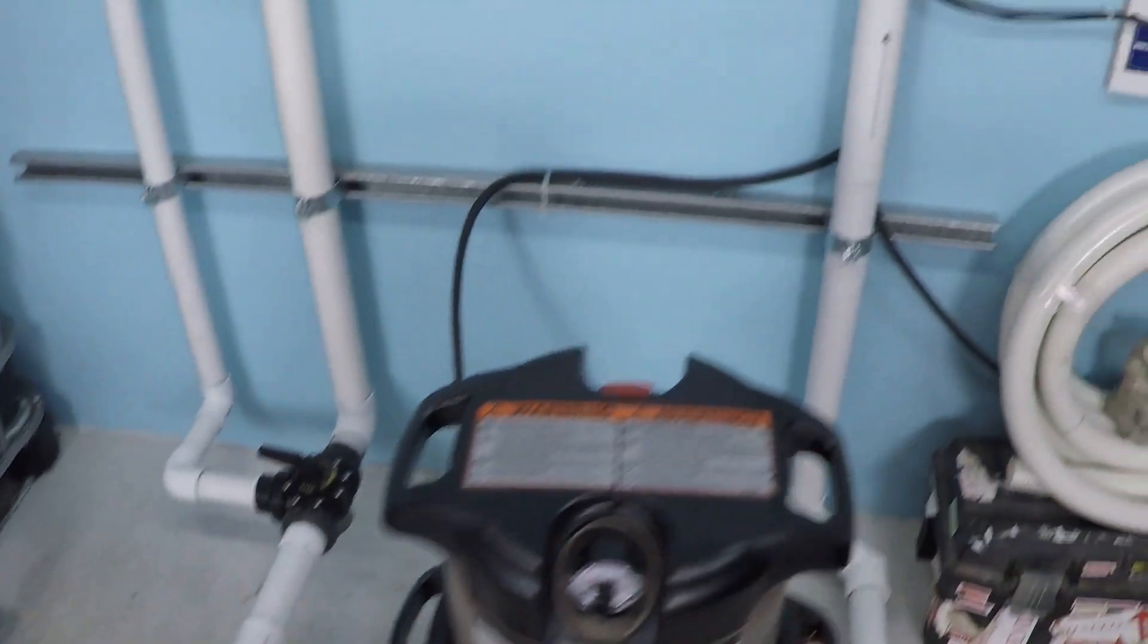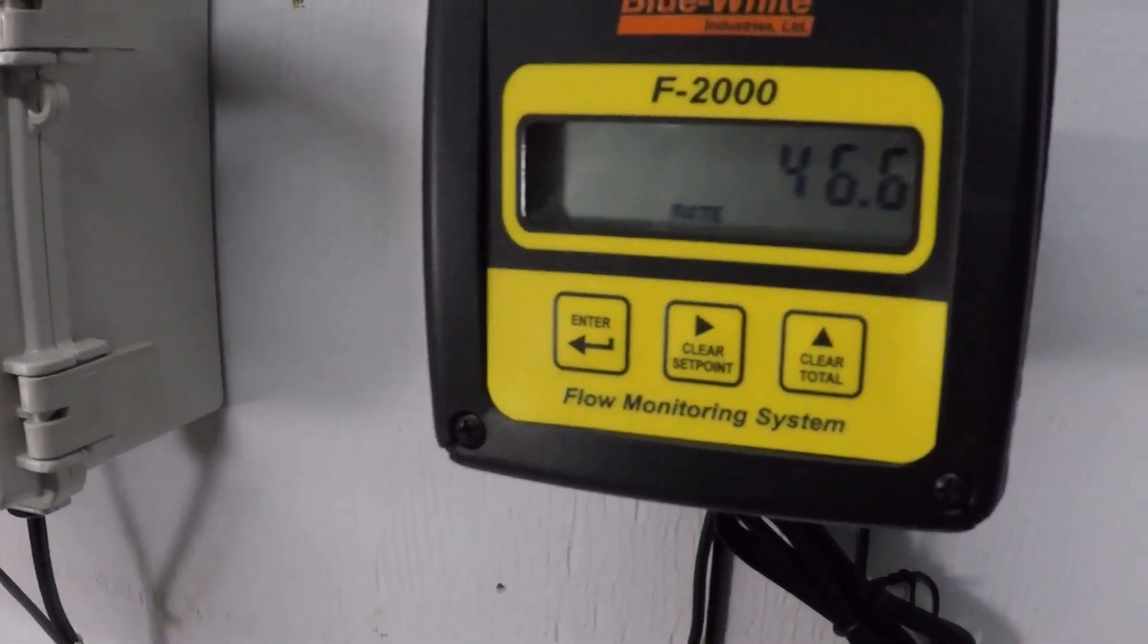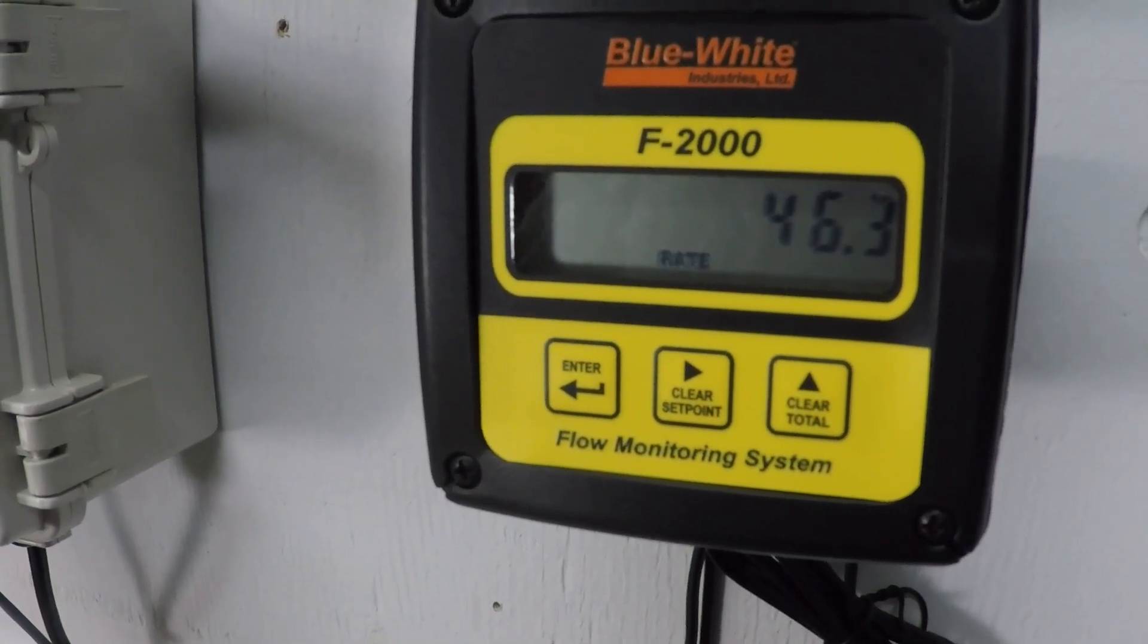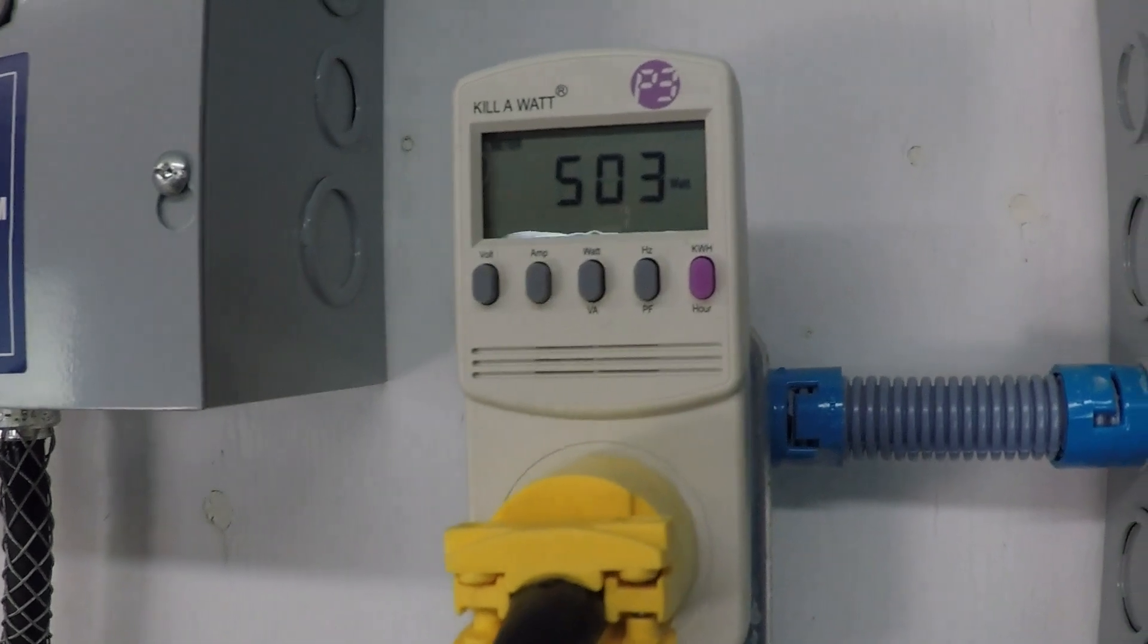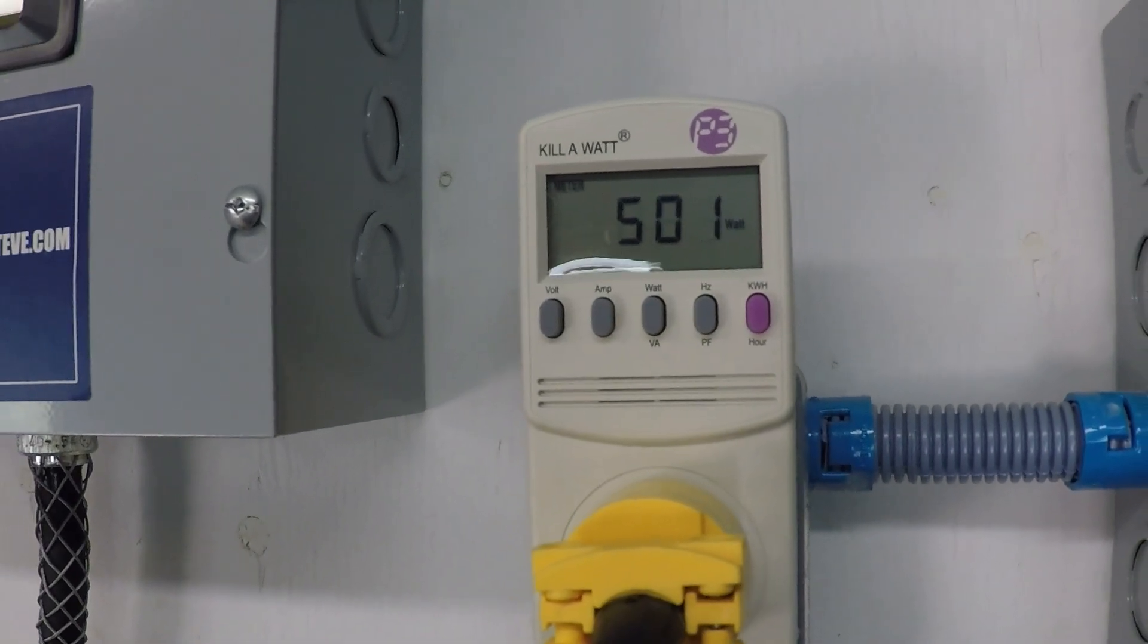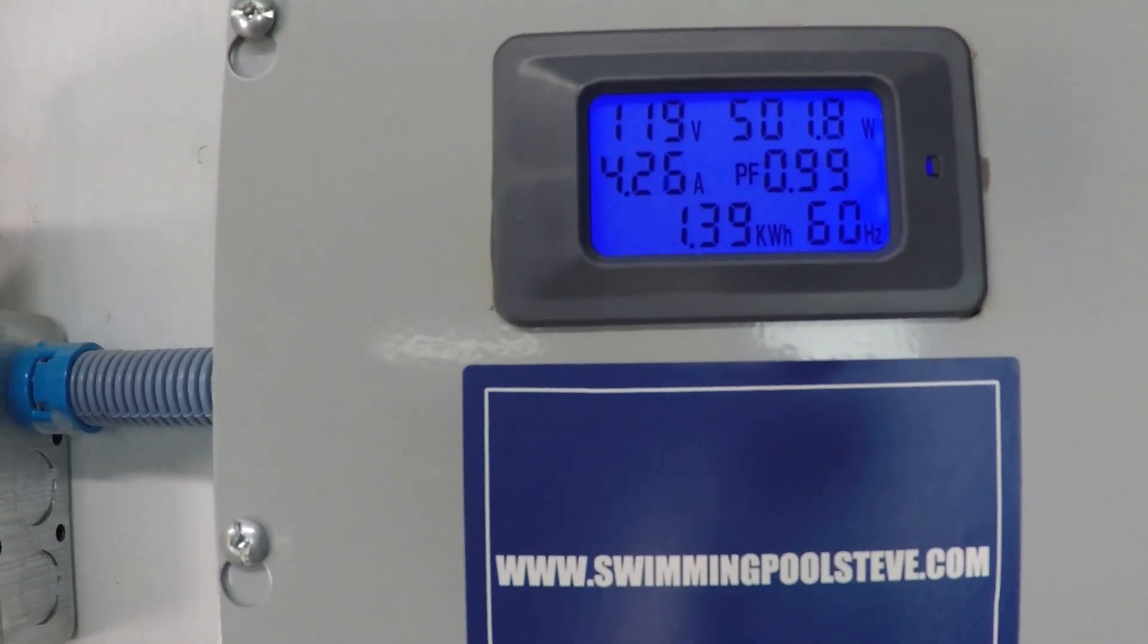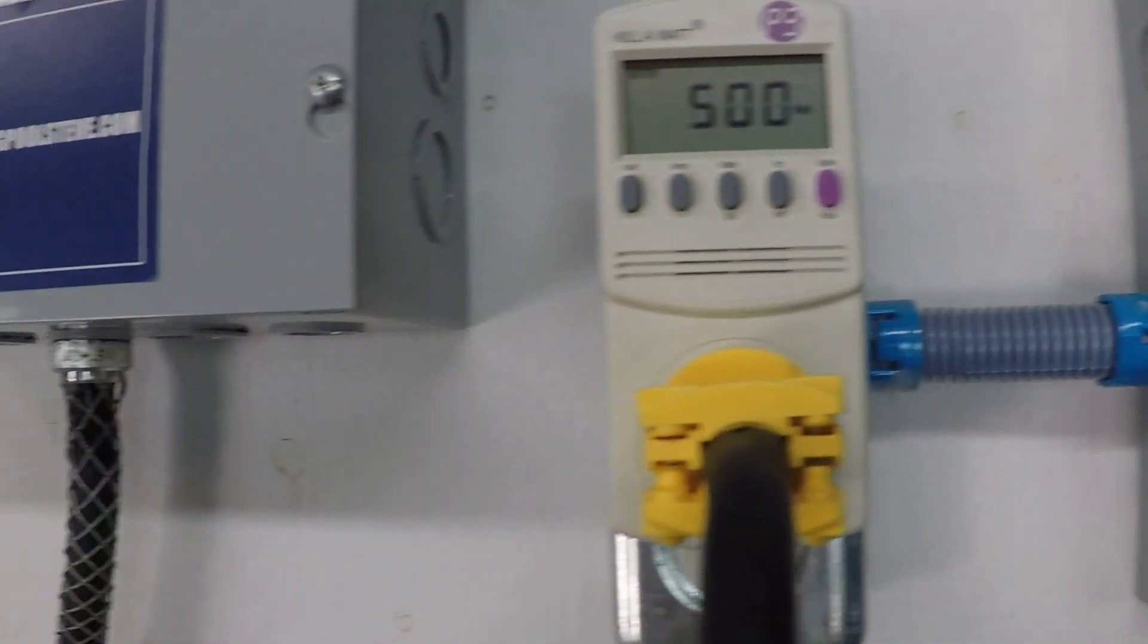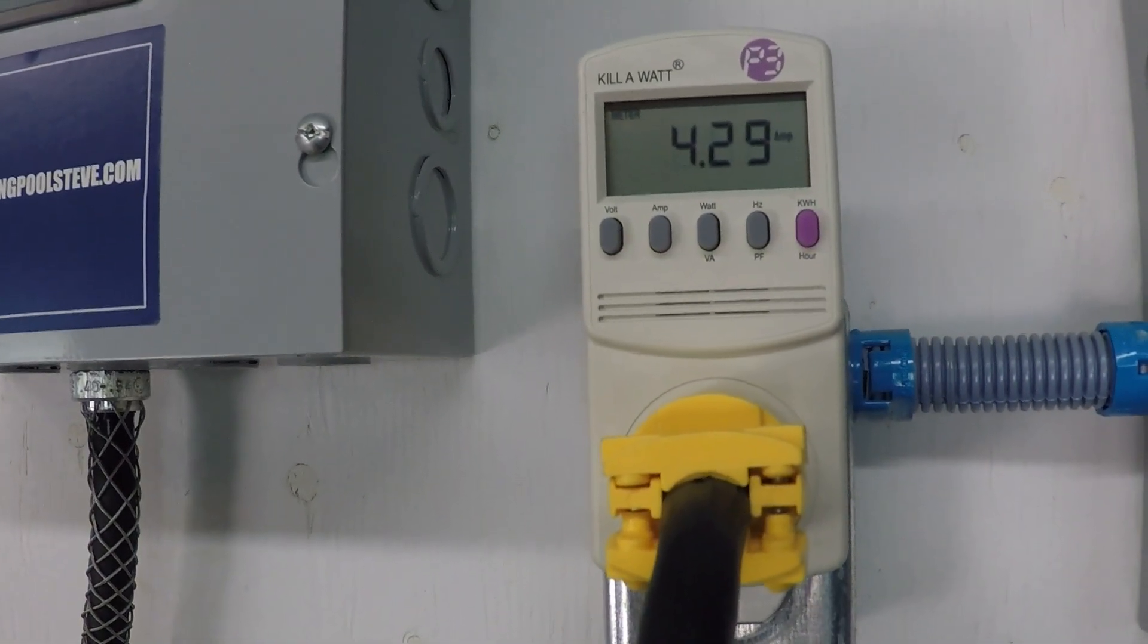2,000 RPM. 46.5 gallons per minute. 500 watts. Nice round number. 4.25 amps on that one. That's pretty good.